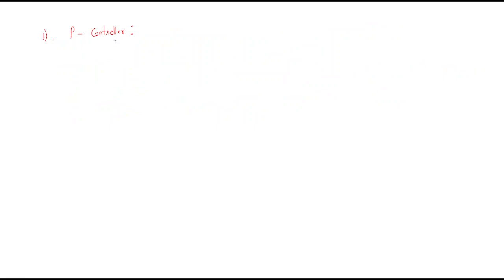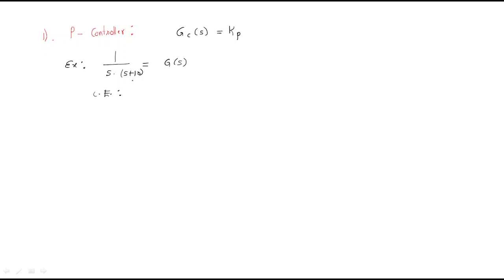Now we will discuss the proportional controller in detail. The controller gain is kp. To understand it, we take an example: G(s) = 1/[s(s+10)]. We find the characteristic equation: s(s+10) + 1 = 0, which gives s² + 10s + 1 = 0.